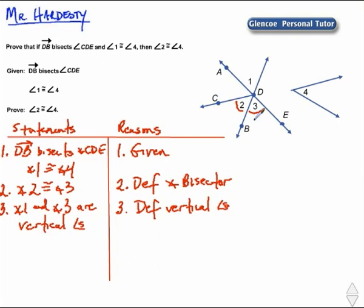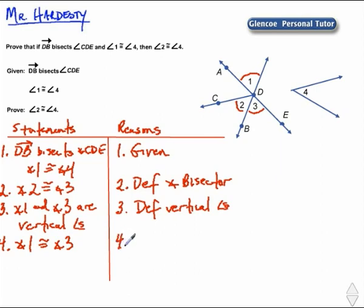We also know by theorem that angle 1 and angle 3 are congruent. So our next statement will state that fact: angle 1 is congruent to angle 3. The reason is the vertical angle theorem.